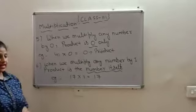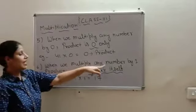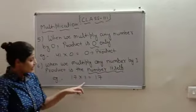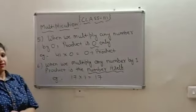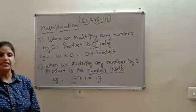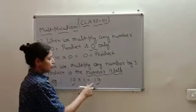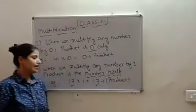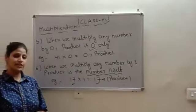Now, next rule says, when we multiply any number by 1, product is the number itself. Now, in this case, if you multiply any number by 1, product will be the same number or you can say number itself. So, in this case, my product will be 17. Hope you all are clear with these rules.